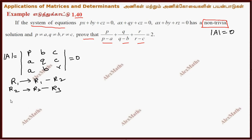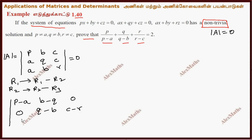Now if we write R1, we write first: P minus A, B minus Q, and then 0. For R2: Q minus B, C minus R. And then the third row remains as it is.